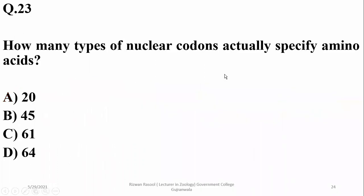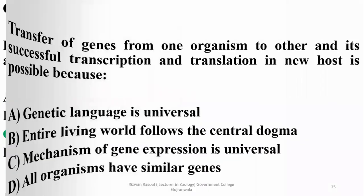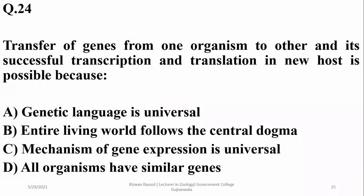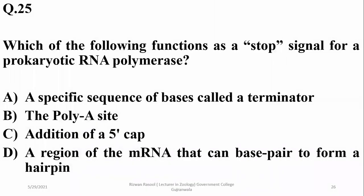How many nuclear codons actually specify amino acids? There are 61 codons which specify amino acids; the other three codons are stop codons. Number 24: transfer of genes from one organism to another and its successful transcription and translation in a new host is possible because the genetic language is universal — there is a similar genetic code in all organisms, with exceptions in mitochondrial codons.